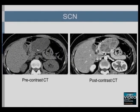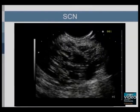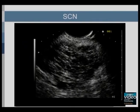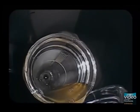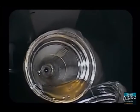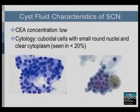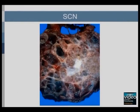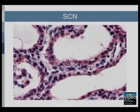Serous cystic neoplasms are usually polycystic. The central nidus often calcifies, as seen on pre-contrast CT. EUS shows the characteristic microcystic nature of a serous cystic neoplasm. EUS FNA may reveal thin and non-mucinous cyst fluid, usually low in CEA concentration. Cytology may reveal cuboidal cells with small round nuclei and clear cytoplasm. The gross appearance shows numerous tiny cysts arranged around a central fibrous scar, which may be calcified. Histologically, serous cystic neoplasms are lined by a single layer of cuboidal epithelial cells.